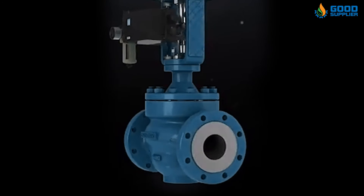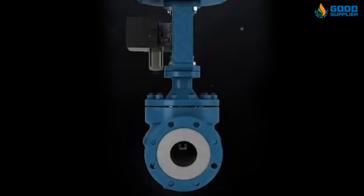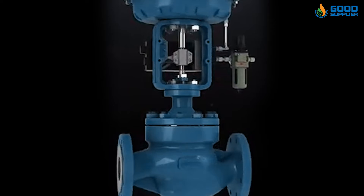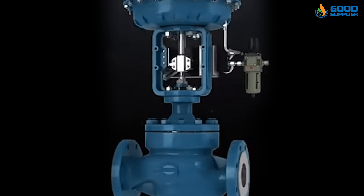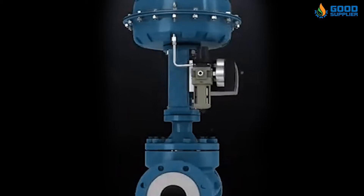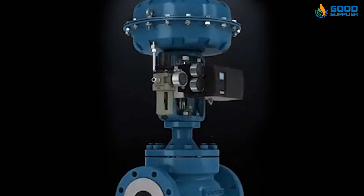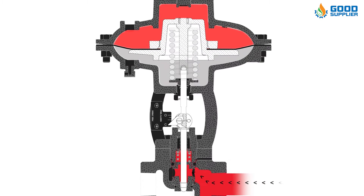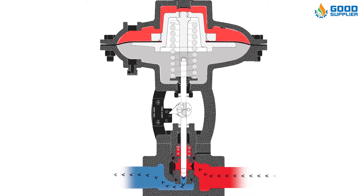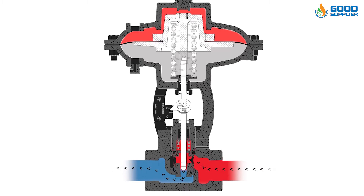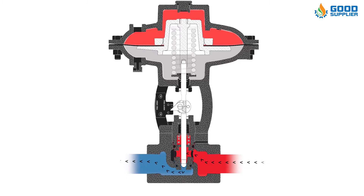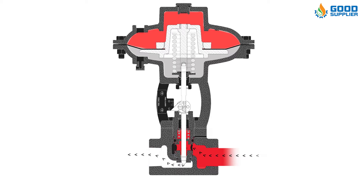Diaphragm valves use a corrosion-resistant lining valve body and a corrosion-resistant diaphragm to replace the valve plug components and control the medium by moving the diaphragm. When the diaphragm is lifted, the passage is opened. When the diaphragm is lowered, it is pressed against the valve body and the valve is closed.